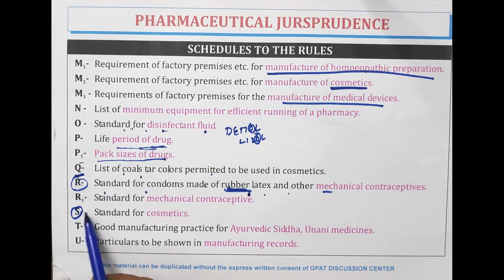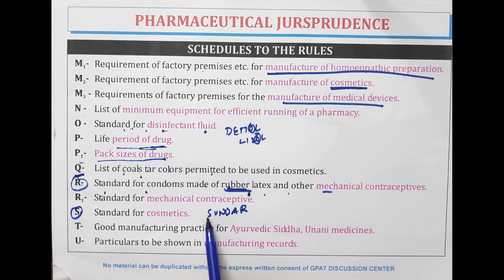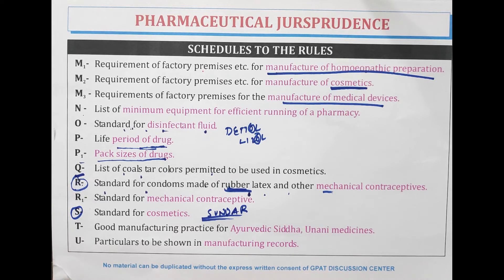Schedule S — S for sundar. We can become sundar (beautiful) by using cosmetics. So Schedule S is for the standard of cosmetics.